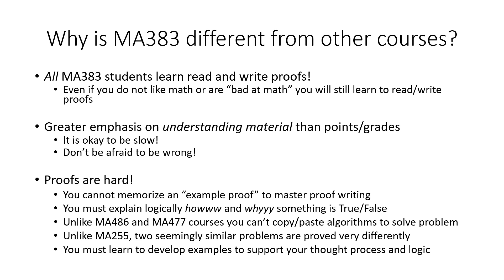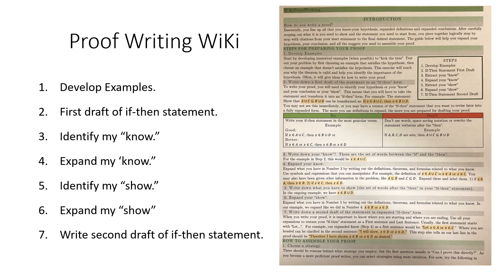You must learn to develop examples to support your thought processes and your logic. This is the outline of the proof writing wiki. Step one is to develop examples, which will help you determine if you will prove your statement to be true, or if you find counterexamples, you can create conditions that will make your statement true and prove those conditions. Step two is to draft your first if-then statement, which helps you identify your hypothesis — also known as your 'know' — and separate that from your conclusion, also known as your 'show.'